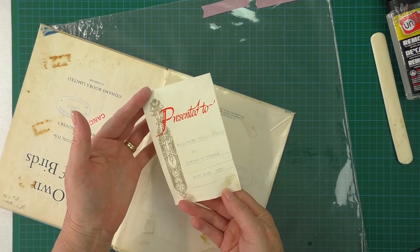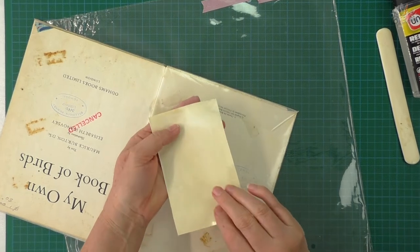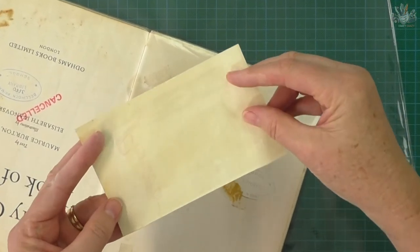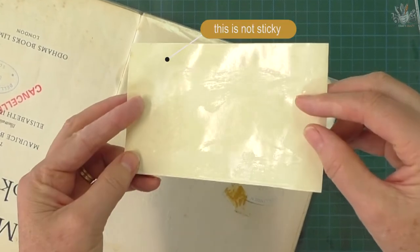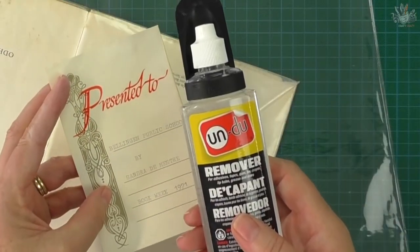There, I have another piece of ephemera for my junk journal. 1971, so that one's 48 years old. See, no damage whatsoever. Even see the little bit of the gum glue and that's an old-fashioned glue that one. This stuff works really well.